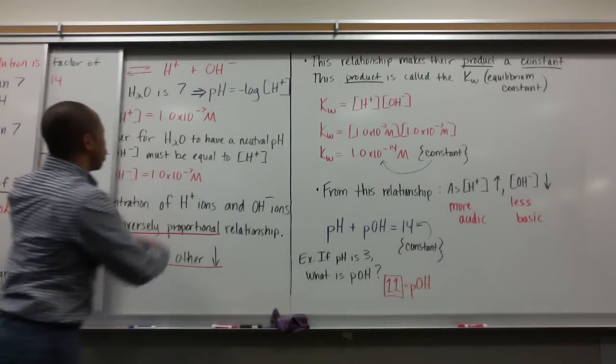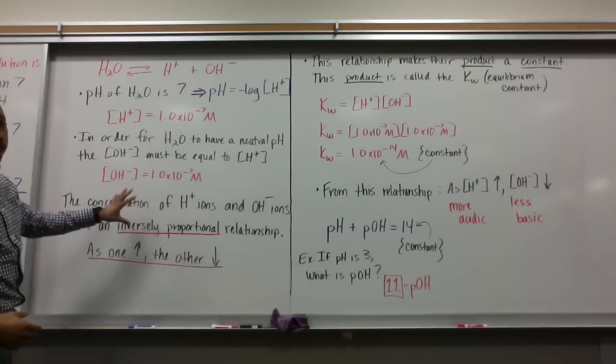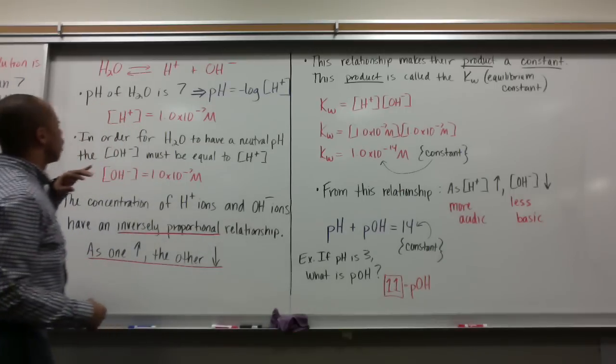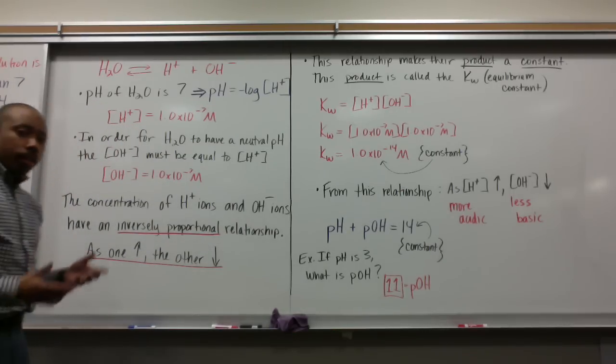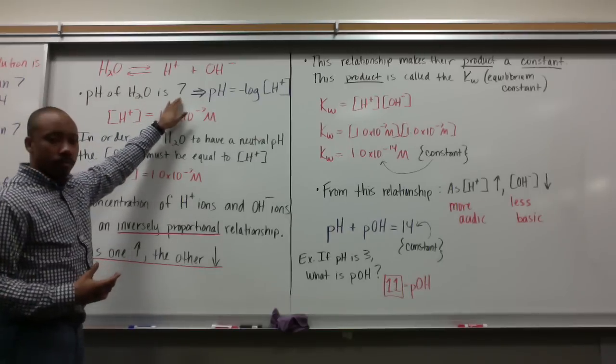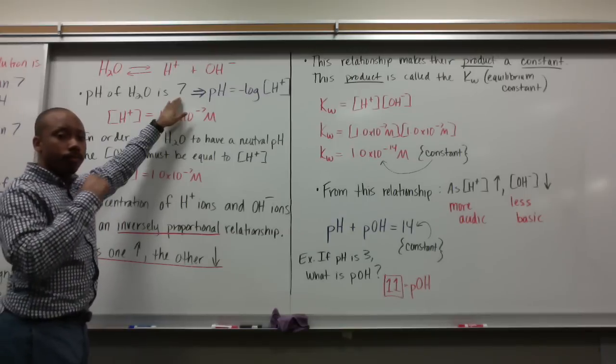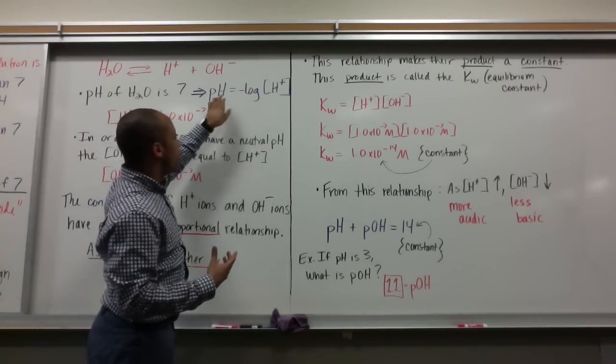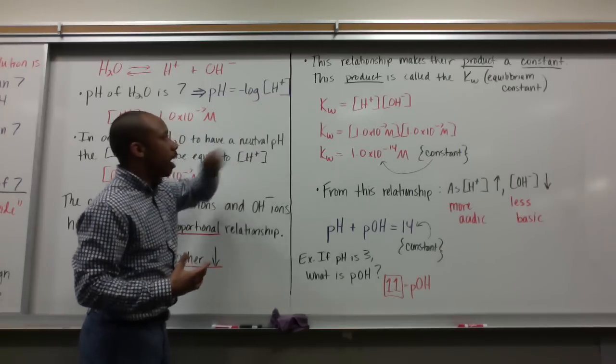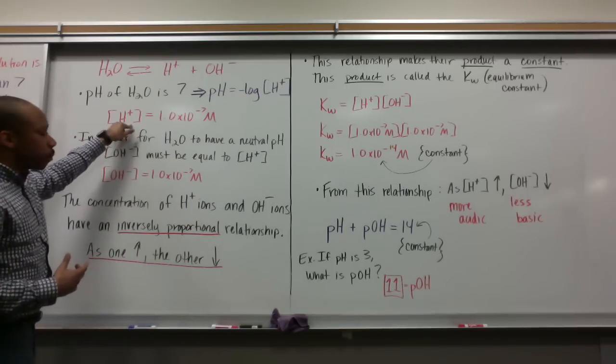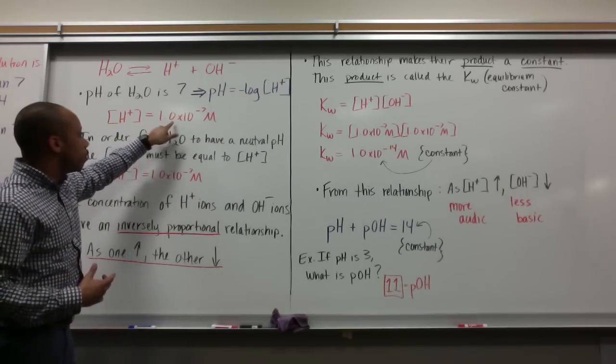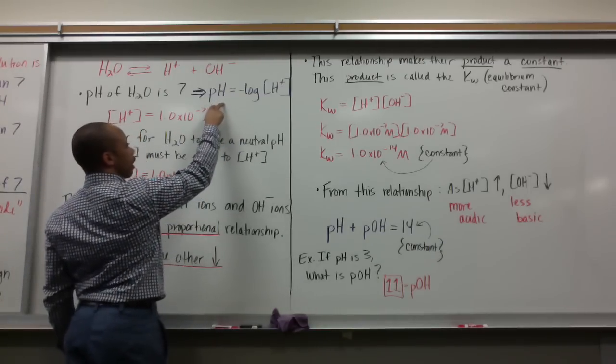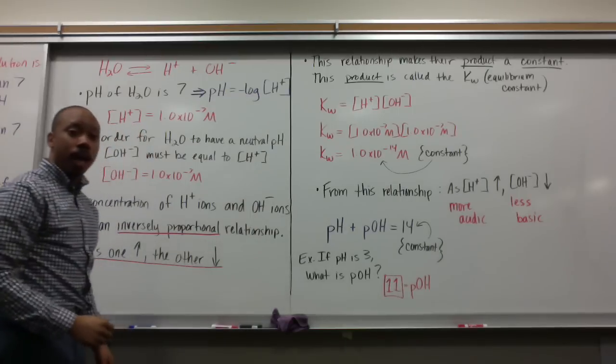With this equation of water dissociating into H plus and OH minus, we have to think about the pH of water. Most of you know the pH of water is 7, neutral. If pH equals the negative log of hydrogen ion concentration, that means H plus concentration must equal 1 times 10 to the negative 7 molar. I did a backwards design, plugging in pH of 7 and solving for H plus.